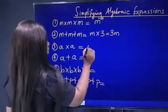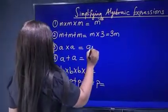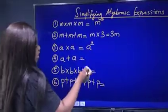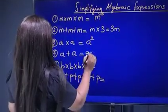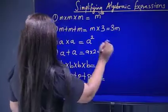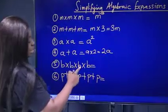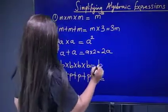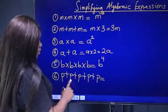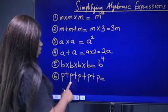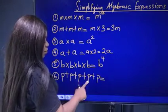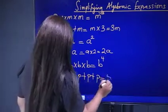a times a is a raised to power 2. a plus a is the same as a times 2, which is 2a — a in 2 places. b times b times b times b times b is b raised to power 4. Then p plus p plus p: p plus p is 2p, plus p is 3p, then 4p, then 5p — which is p in 5 places, giving 5p.